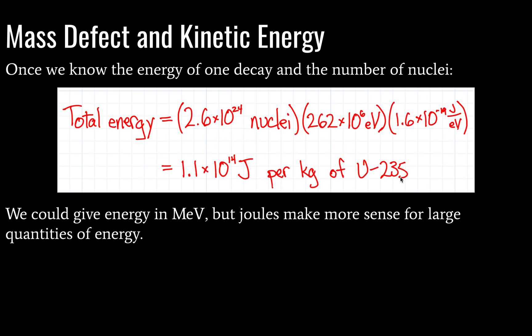So, we could give our energy in megaelectron volts, but those are very, very small, and we have a very large amount of energy. So, it makes more sense to use joules here. Also, this value is a little bit high for the actual energy released, because we're going to lose some energy to kinetic energy of neutrons.